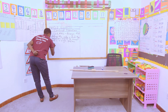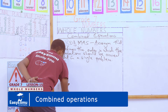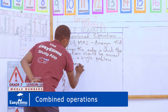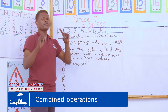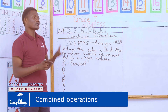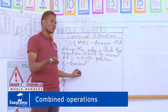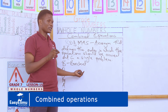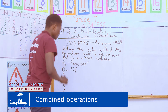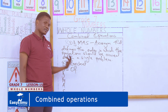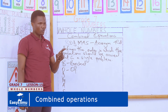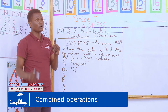So BODMAS, if we write it vertically: B stands for Brackets. This implies that if you have a part of your equation enclosed within brackets, then you are supposed to perform the operation inside the bracket before you move to the next step. Then we have O, which stands for Off. Off simply means multiplication, but it must be carried out first before the normal multiplication.